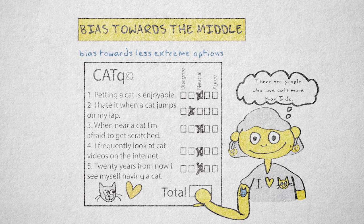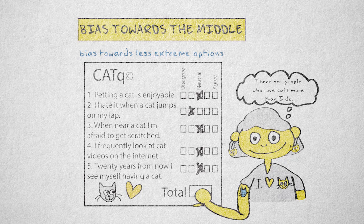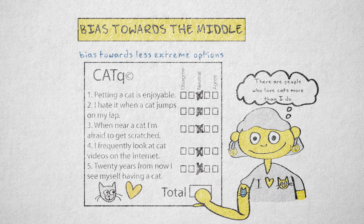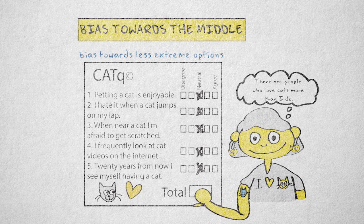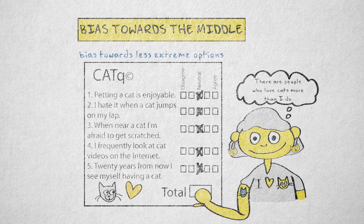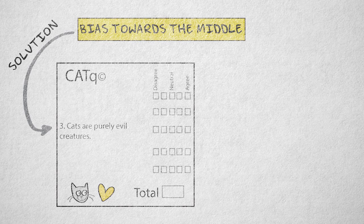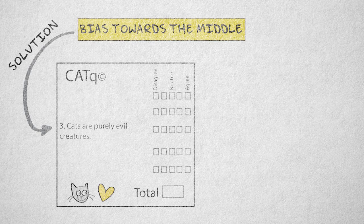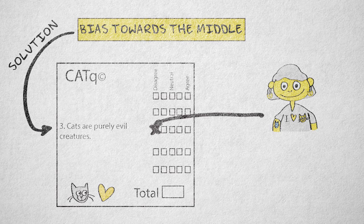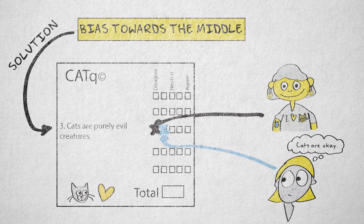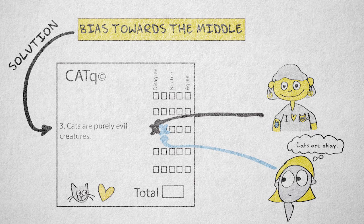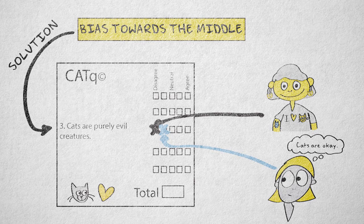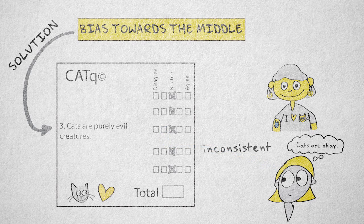The ultimate version of bias to the middle occurs when there's an uneven number of response options, and a respondent always chooses the middle option. This response pattern can be detected by including some extra, extremely strong items, such as cats are purely evil creatures. Cat lovers will strongly disagree, but even people who like cats just a little should show some disagreement with this statement. If they respond with the middle category to all items, including these extremely worded items, their response pattern is inconsistent.